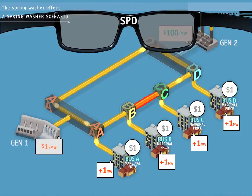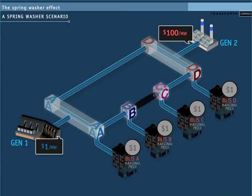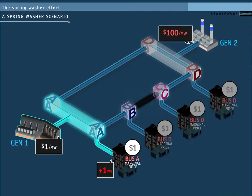Let's now view the scenario through SPD's eyes. We'll calculate the marginal prices at each bus starting with bus A. If required, an extra unit of load at bus A can be supplied by generator 1 for $1, because it doesn't need to flow through BC, so the marginal price at bus A stays at $1.